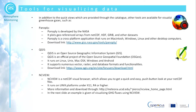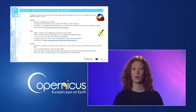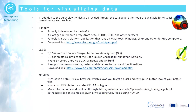QGIS is an open source geographic information system and an official project of the Open Source Geospatial Foundation. It runs on Linux, Unix, Mac, Windows and Android. It supports numerous vector, raster and database formats and functionalities. QGIS can be downloaded through the link on the slide.